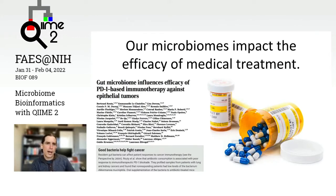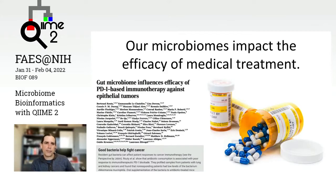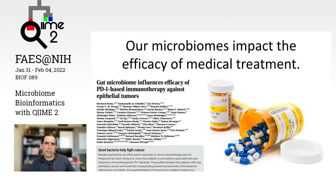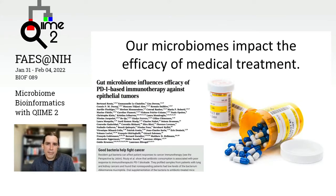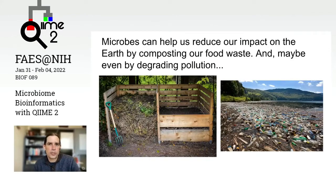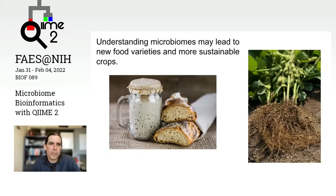One of the most exciting current areas of microbiome research is understanding how we might modulate the human microbiome to improve treatment for disease. A very famous paper by Routy et al. showed that immunotherapy for cancer treatment was more or less effective depending on the composition of the recipient's microbiome. This is opening up a lot of new areas for medical treatment. This technology has also been widely applied in environmental and agricultural science — understanding how microbes can help us reduce our impact on the planet, for example by composting waste and degrading pollution, and leading to new varieties of food and more sustainable crops.